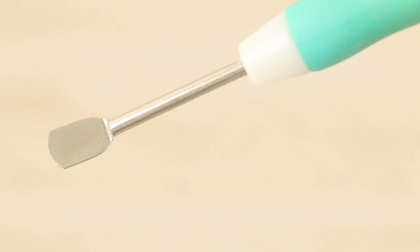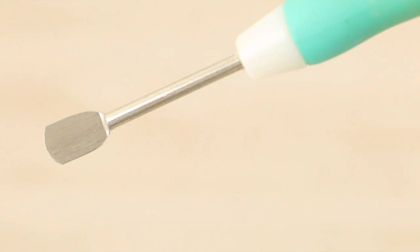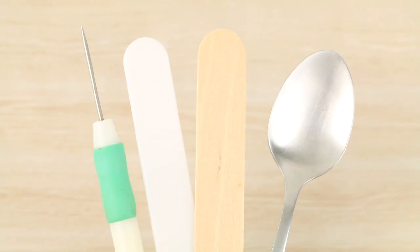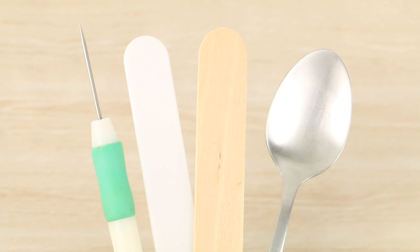To mix the sauces together I use a flat spatula type tool. If you don't have one like this you can use things like sewing needles, toothpicks, popsicle sticks or even a spoon that you use for crafting.